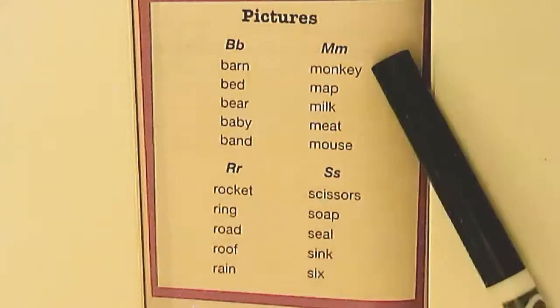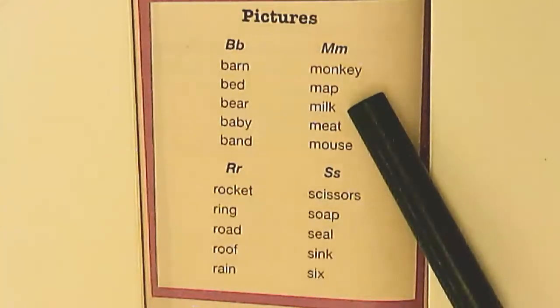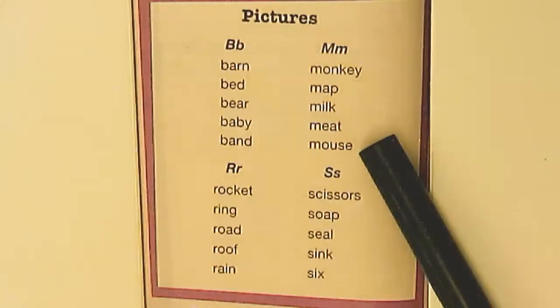For M, we have monkey, map, milk, meat, and mouse.